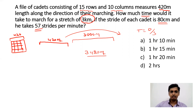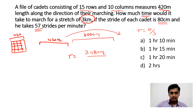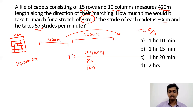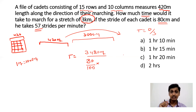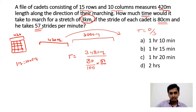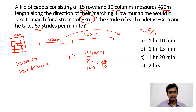We can find the time in seconds. In the numerator we have the length in meters, and in the denominator we find the speed in meters per second. So 80 centimeters is 80/100 meters. In one minute they take 57 strides, so in one second they take 57/60 strides. One minute is 60 seconds, so 57 strides per minute equals 57/60 strides per second.